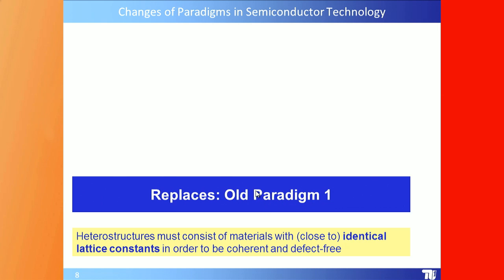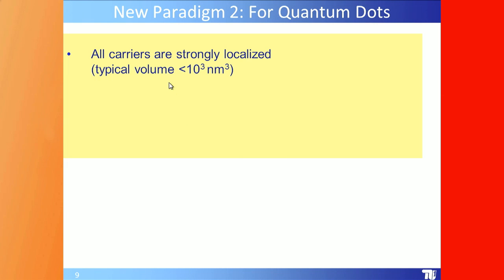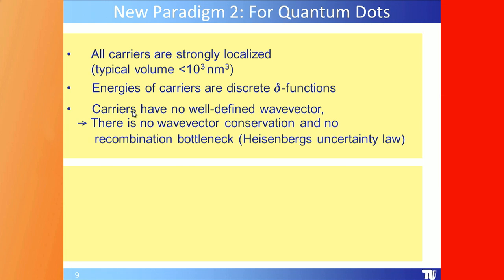We have to replace old paradigms. The old rule said heterostructures must consist of materials with nearly identical lattice constants to be coherent and defect-free — essential for any photonic device. The new paradigm is: heterostructures must consist of materials with largely different lattice constants to initiate strain-driven self-organization. Lattice mismatch is the driving mechanism. Carriers are now strongly localized in volumes smaller than 10³ nm³, and carrier energies are discrete delta functions — an atomic property, not a solid-state property.